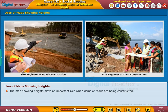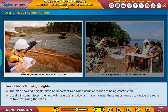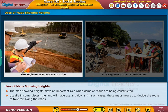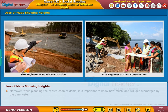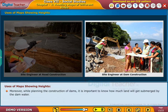Maps showing heights are especially important when dams or roads are being constructed. Usually, in some places, the land will have ups and downs — in such cases, these maps help us decide the route to take for laying roads. Moreover, while planning the construction of dams, it is important to know how much land will get submerged by the dam water.